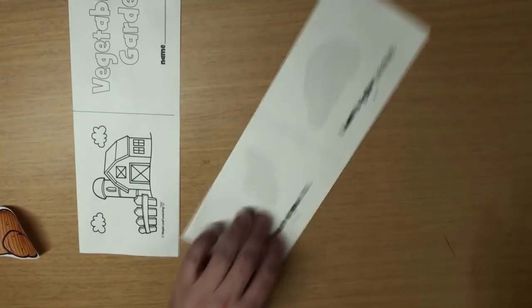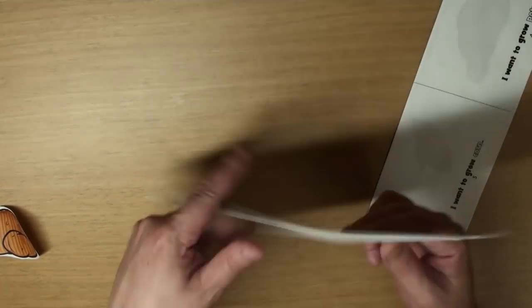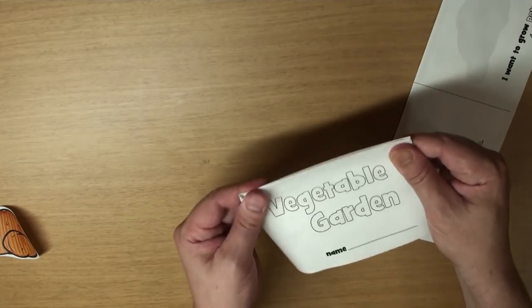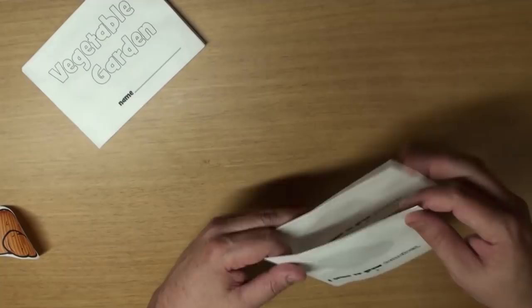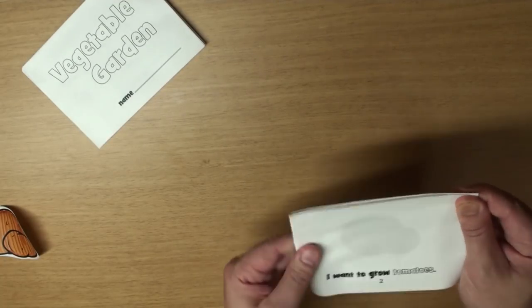And glue it together. Great! Now we need to do some folding. Fold it like this so the cover's on the outside with this one. And this one, fold it so page two is on the outside, ok? Yeah.